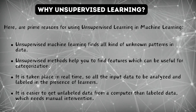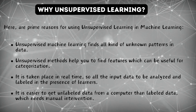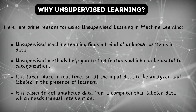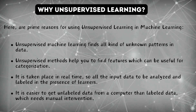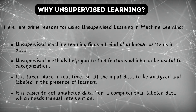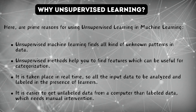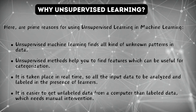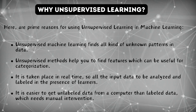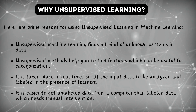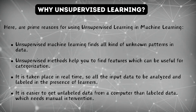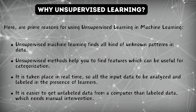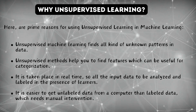Why do we need to understand the concept of unsupervised learning? Here are prime reasons for using unsupervised learning in machine learning. Number one, unsupervised machine learning finds all kinds of unknown patterns in data. Number two, unsupervised methods help you to find features which can be useful for categorization. Number three, it takes place in real time, so all the input data is analyzed and labeled in the presence of learners. And number four, it is easier to get unlabeled data from a computer than labeled data, which needs manual intervention.